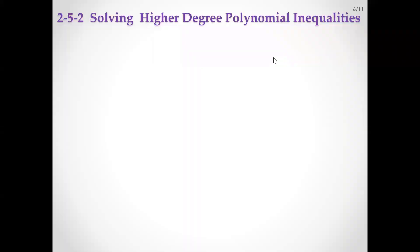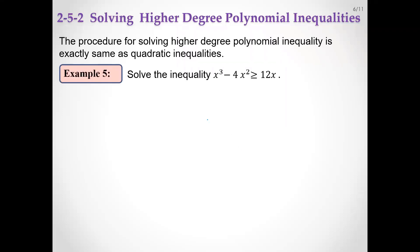For higher degree polynomial inequalities, same idea. Here you saw this inequality, degree 3. Standard form first: x cubed minus 4x squared minus 12x greater than or equal 0. Factor, so x is a common factor. Factor again this quadratic polynomial. We have obvious roots: minus 6 and plus 2.